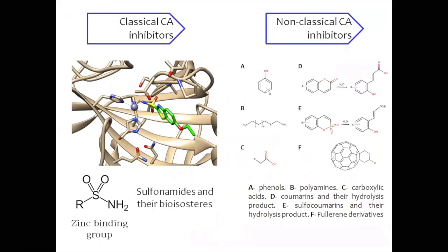Classical CA inhibitors bind to the zinc ion through a deprotonated nitrogen and take the place of the water in the fourth coordinating position. Several classes of compounds have been identified as non-classical inhibitors exhibiting increased isoform specificity. However, the lack of isoform selectivity continues to be the main problem.